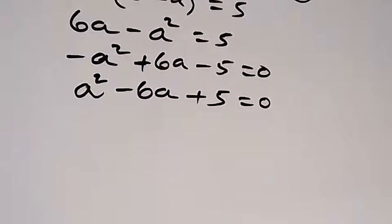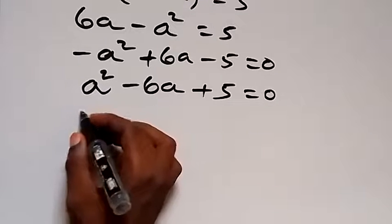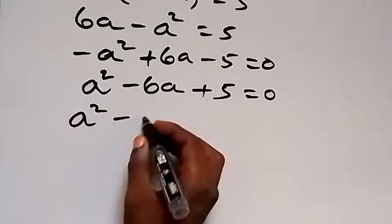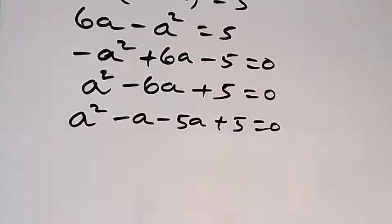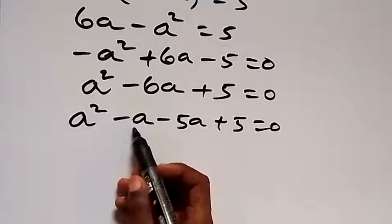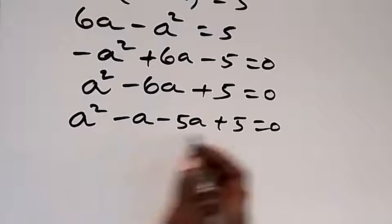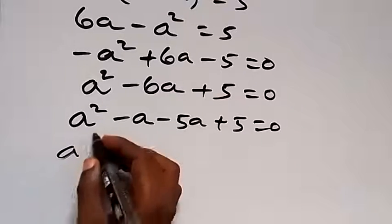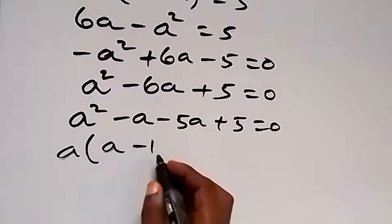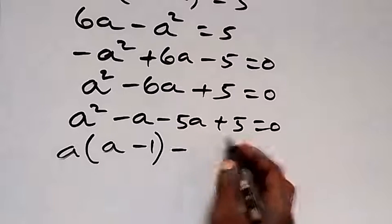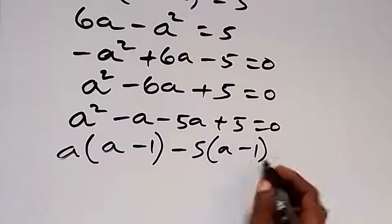This is a quadratic equation in terms of a. We can factorize: a squared minus a minus 5a plus 5 equals 0. Note that minus a minus 5a is the same as minus 6a. Grouping: a(a minus 1) minus 5(a minus 1) equals 0.